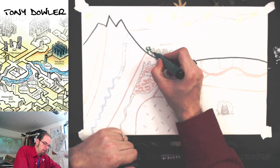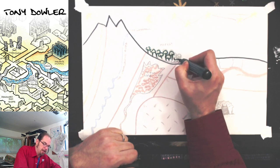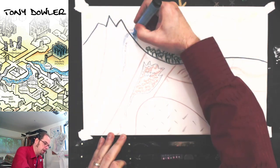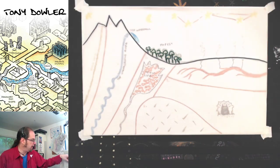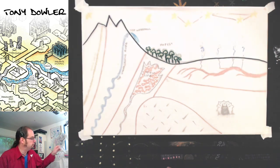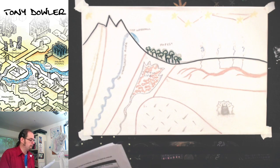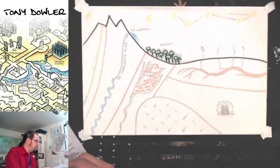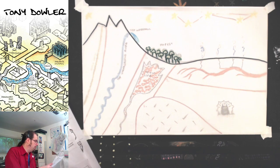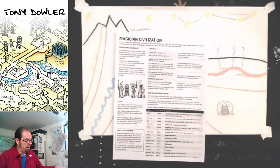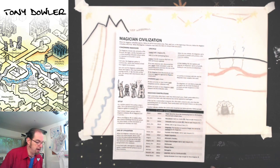I'm just going to re-sketch some of the features I know are going to be significant right from the start, but I'll leave all the underground stuff undrawn until it becomes significant in the game. Let's draw a little steam here. The Age of Civilization — there are a number of civilizations to choose from, but I'm going to do the magicians today.